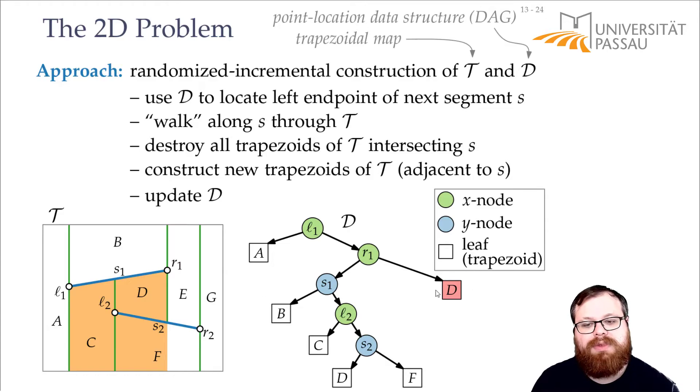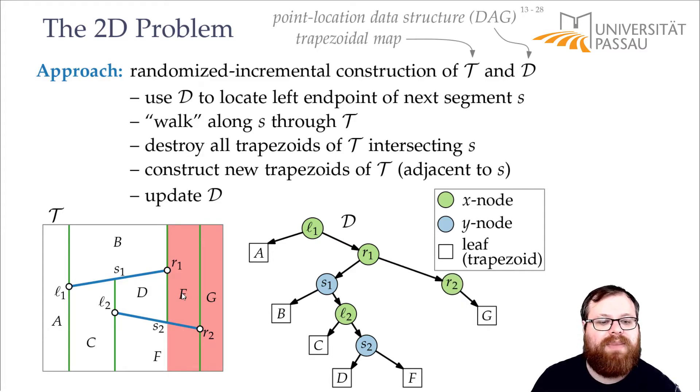What happened here, we destroyed D, we first have to separate it through the segment through R2. It gives us a right part, which is just G, and a left part. And the left part is again separated by S2 into E, and also into F.